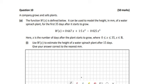This calculates the height of a plant, basically a water spinach plant, for the first 35 days after it starts to grow.